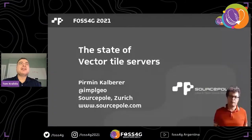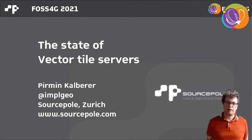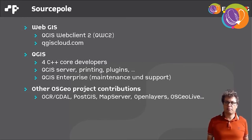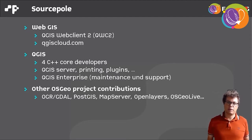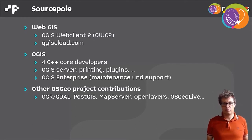Welcome to my talk about the state of vector tile servers. My name is Permin Calver, I work for Source Pole, located in Zurich. We are a group of developers in the area of web GIS, we develop the web QGIS web client tool and provide a platform called QGIS Cloud. We are a group of four core platform developers doing QGIS and QGIS Server development, plugin development, providing maintenance and support, and contributing to many other OSGeo projects.